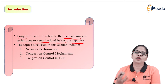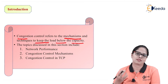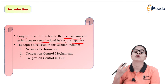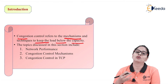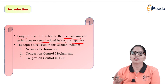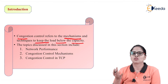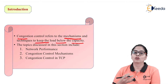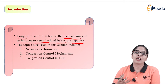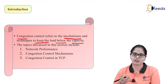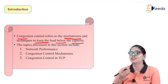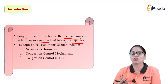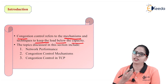Every network has a particular capacity. For example, one network has the capacity of processing 200 packets, and you are sending 300 packets on that network. The network cannot process all of them, so there is a chance of congestion because you are providing more load compared to the network capacity.